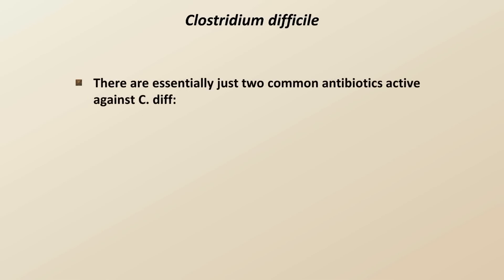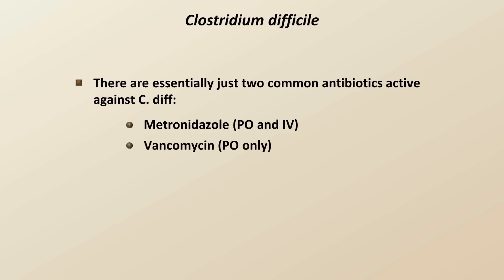There are essentially just two common antibiotics active against C. diff: metronidazole, in either PO or IV form, and vancomycin, which for C. diff is used in PO form only, as it has negligible absorption in the GI tract and thus few if any side effects. As vancomycin is only active against gram-positive organisms, it only minimally impacts repopulation of the gut flora during recovery from the colitis, as most gut flora are gram-negatives.